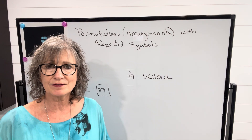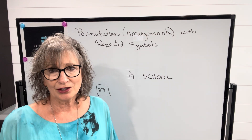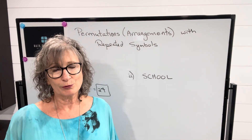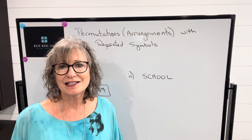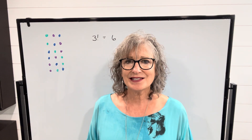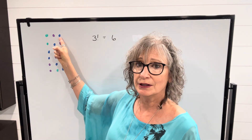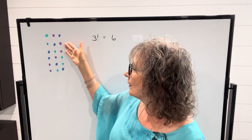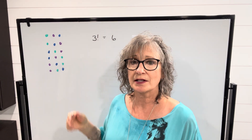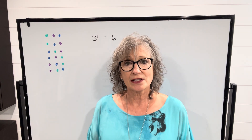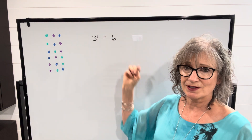However, sometimes you're going to have situations where one or more letters will be repeated. Let's talk about how we calculate the number of permutations or arrangements in those cases. To do that, let's look at examples using different colored skittles. If we have three different colored skittles — green, purple, and blue — I can arrange them in six different ways, so the number of permutations is three factorial, which is six.